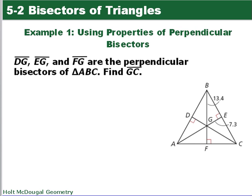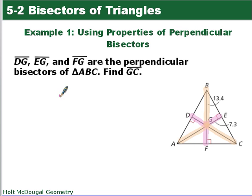Here's our first example. Segments DG, EG, and FG are perpendicular bisectors of triangle ABC, which means the mid-segments are congruent. We want to find the length of DG. According to the circumcenter theorem, DG equals AG, so DG is going to be 13.4.